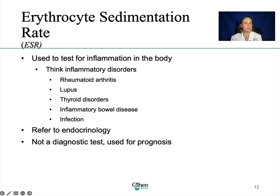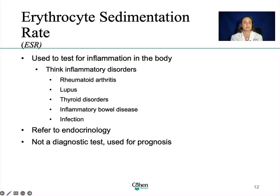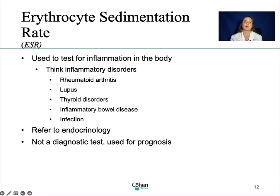Common symptoms that may trigger you to order an ESR include headache, joint aches, digestion problems, pelvic pain, low red blood cells, unexplained weight loss, and decreased appetite. ESR, for the most part, has to do with inflammation. In practice, we often refer these people out to endocrinology to make sure there's not an autoimmune underlying issue causing the inflammation — maybe rheumatoid arthritis or lupus. ESR is definitely not diagnostic but it needs to be further evaluated.